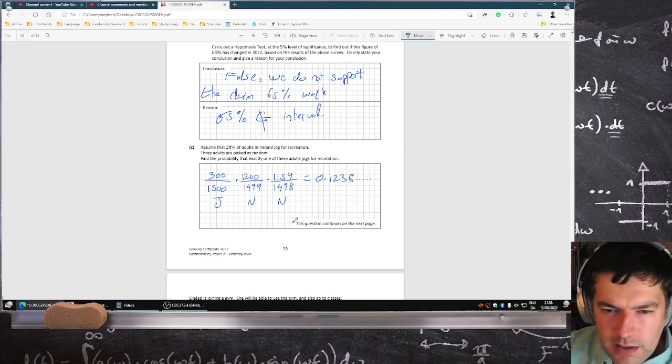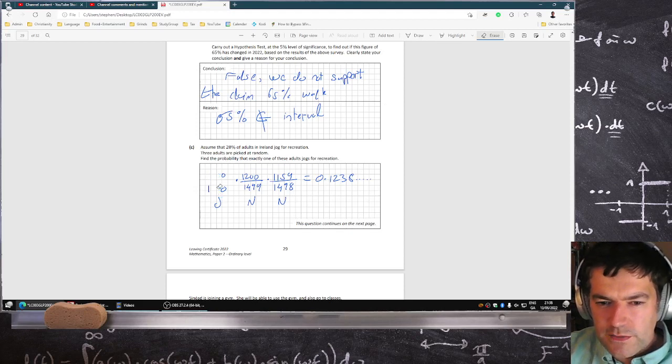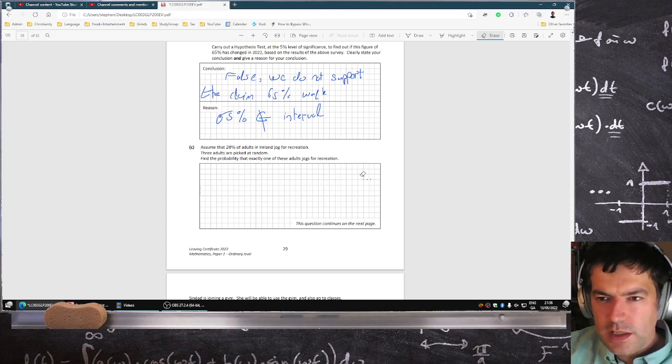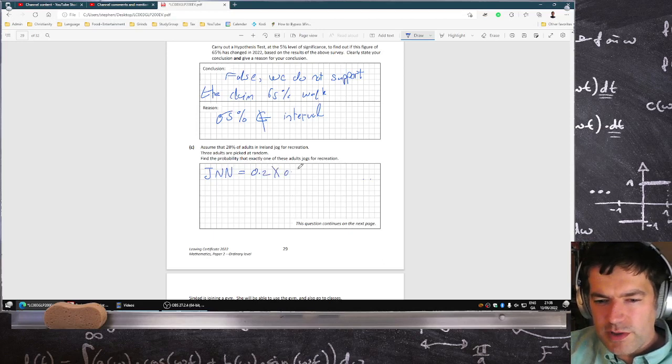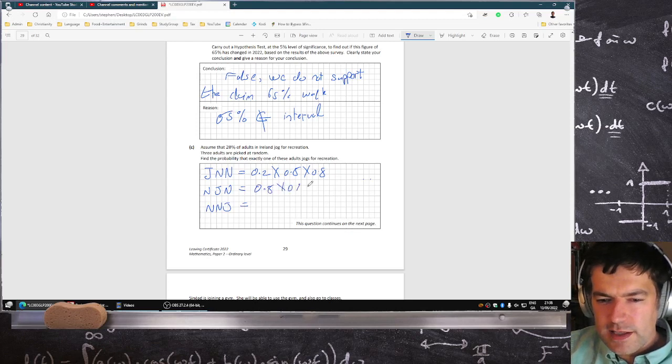No, okay, it's not 20% of our sample, it's 20% of people in Ireland. So what you have is jogger, non-jogger, non-jogger. That would be 0.2 times 0.8 times 0.8. Then you could have non-jogger, jogger, non-jogger, and then non, non, jogger. So there's three ways this could happen that you could get exactly one.